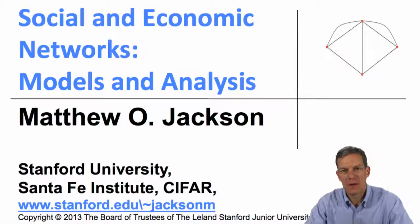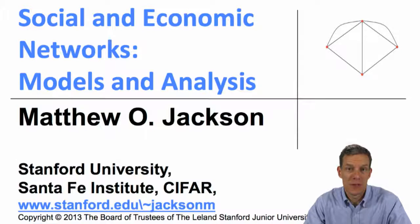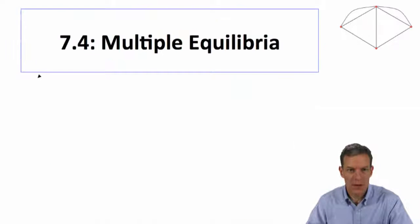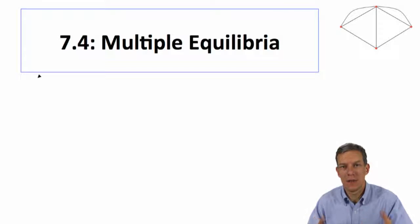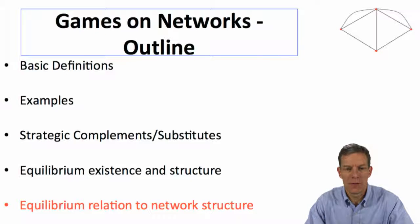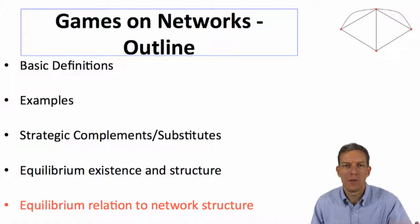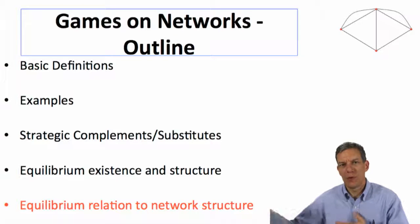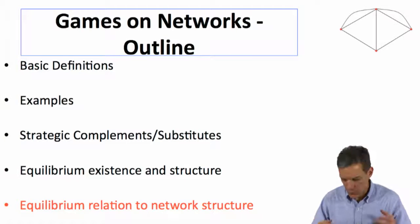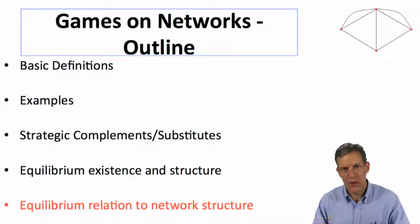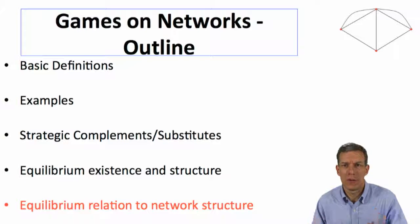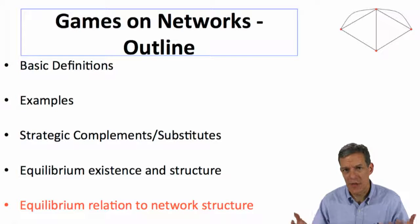We've got some basic definitions and ideas behind us in terms of understanding equilibria in network games, and now we can look at a little more structure. I want to talk about when it is that there are multiple different actions that can be sustained in a given network — when some people adopt a new technology and others don't, or some people become educated and others don't. When can we sustain multiple actions even with a lot of homogeneity in the society, where anybody has the same preferences, yet different people take different actions based on their position in the network?